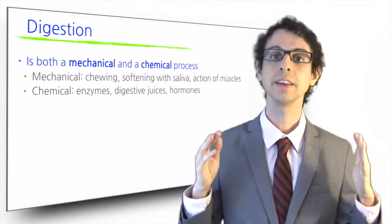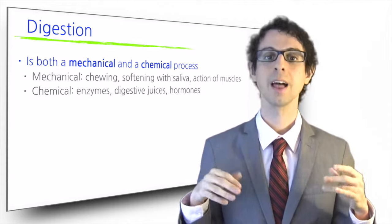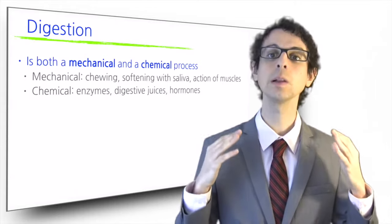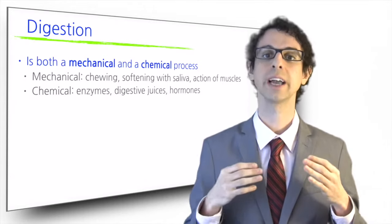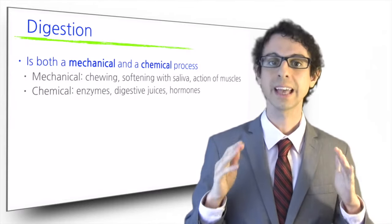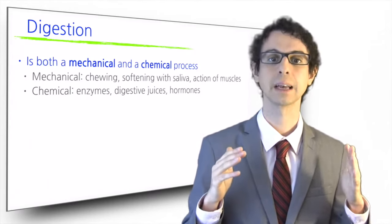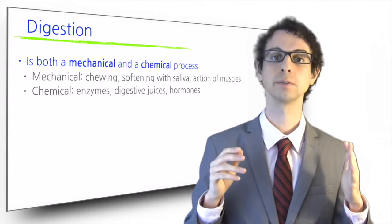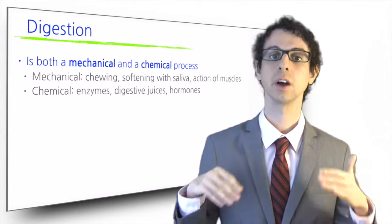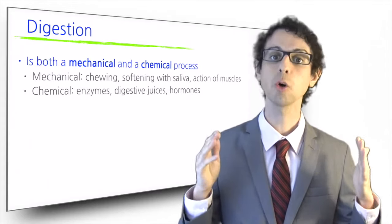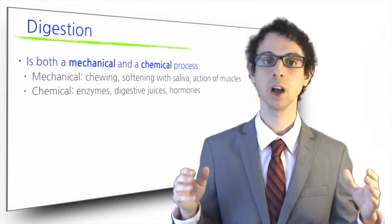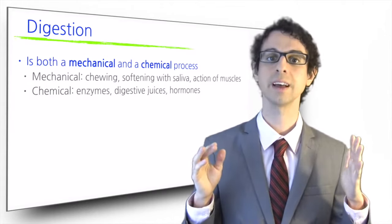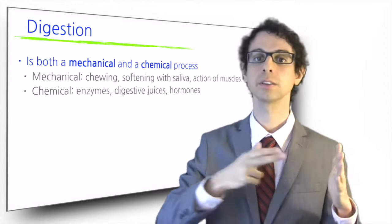As far as digestion is concerned, this is both a mechanical and a chemical process. The mechanical part is accomplished by chewing, softening food with saliva, and by muscles all along the GI tract that keep mixing the GI content and moving it along. The chemical part is accomplished by specific enzymes, which break down nutrients into units small enough to be absorbed, as well as other digestive juices that create optimal conditions for these enzymes to work, and different hormones that orchestrate the whole process. For those not familiar with biochemistry, just think of digestive enzymes as little scissors that cut nutrients into smaller pieces.